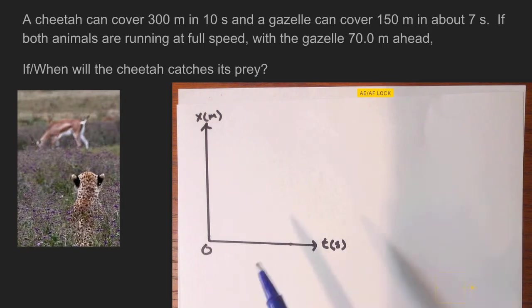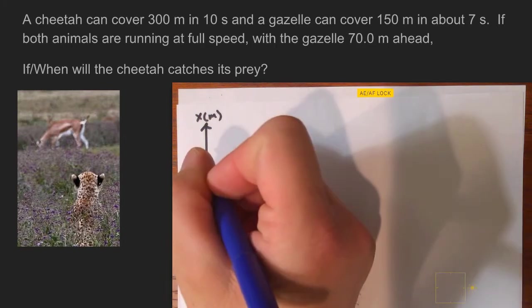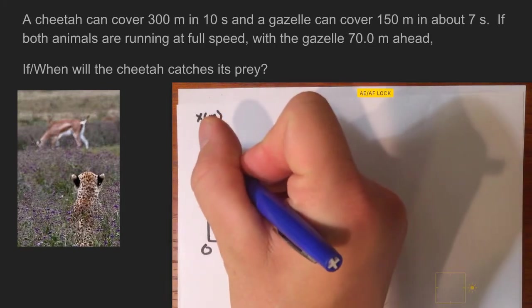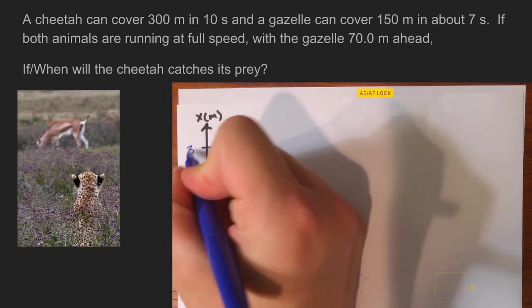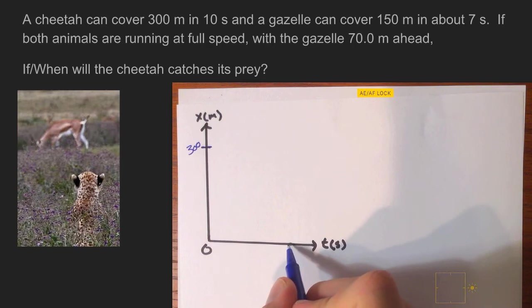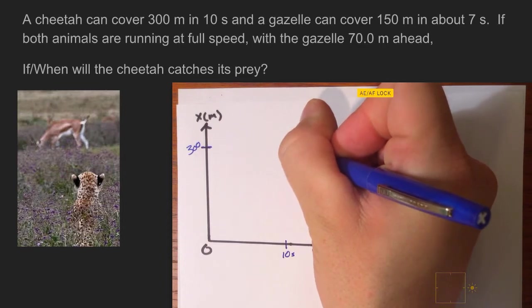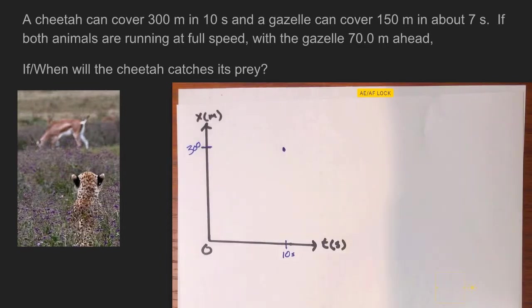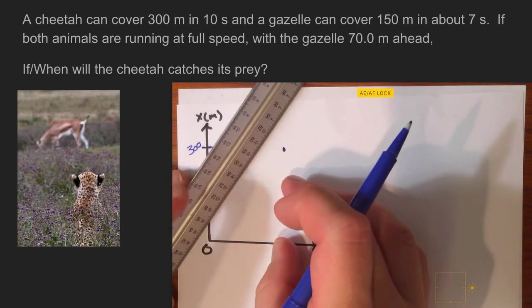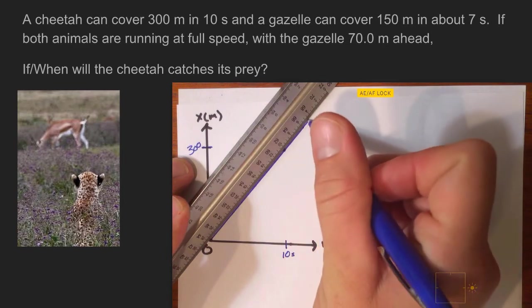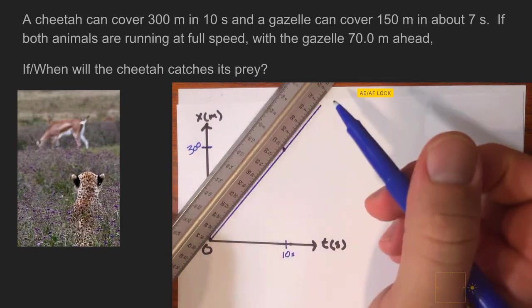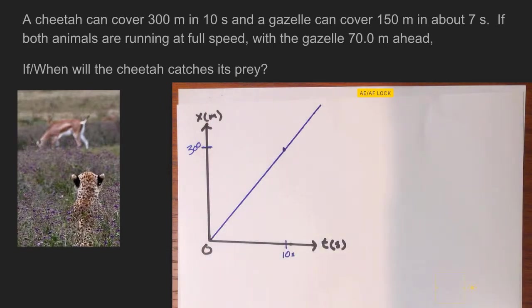So I got a position versus time graph set up, and let's start putting on the information we need. First piece of information is I'm gonna use blue for the cheetah. Color code, it just makes it a little bit easier to understand which one's what. We know that the cheetah is going to be able to travel to a position of 300 meters from where he started, and it's gonna take the cheetah 10 seconds to do that. So if we go ahead and we figure out where that spot would be, we go ahead and start from zero, we're gonna draw a nice straight line.